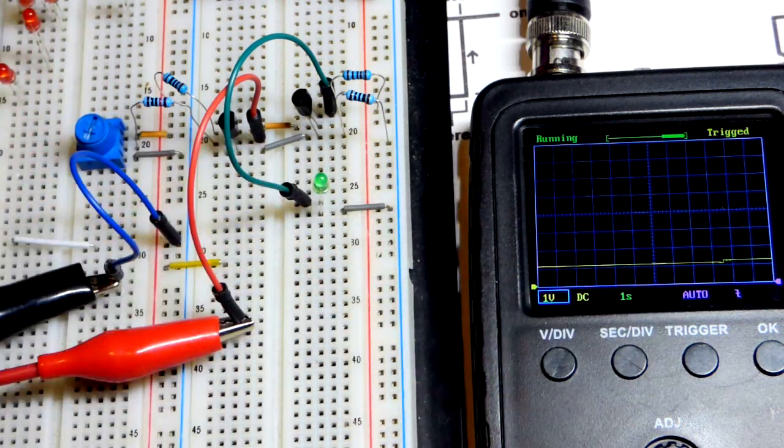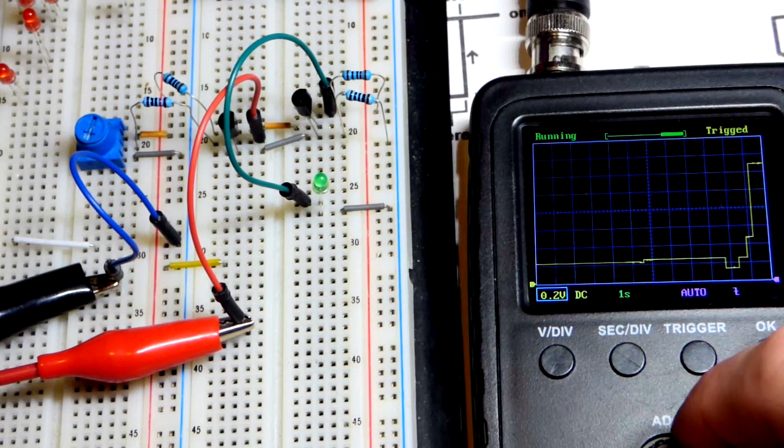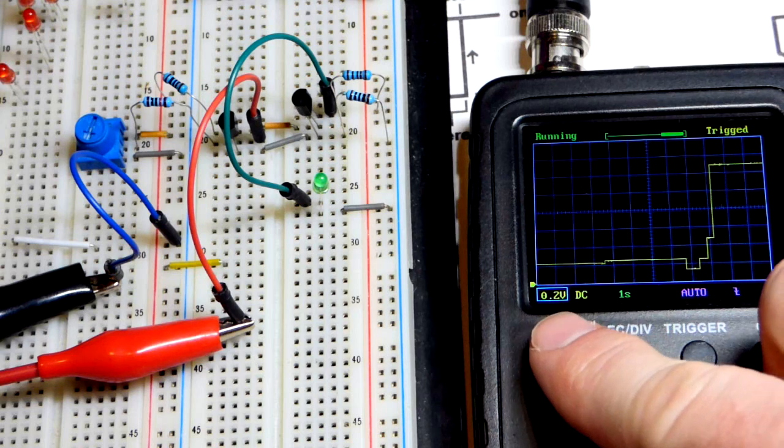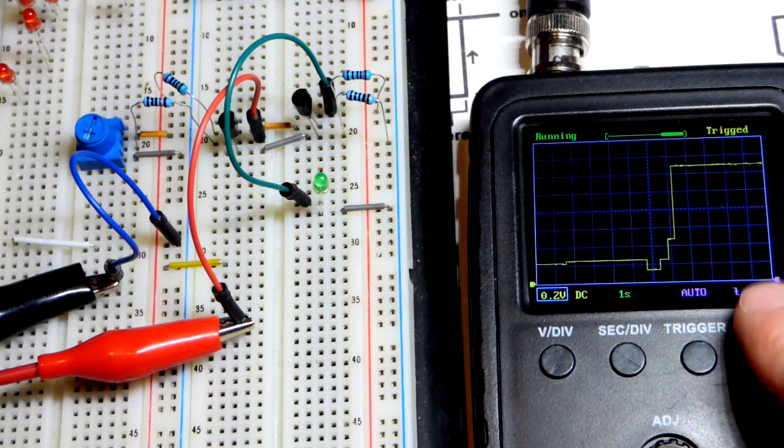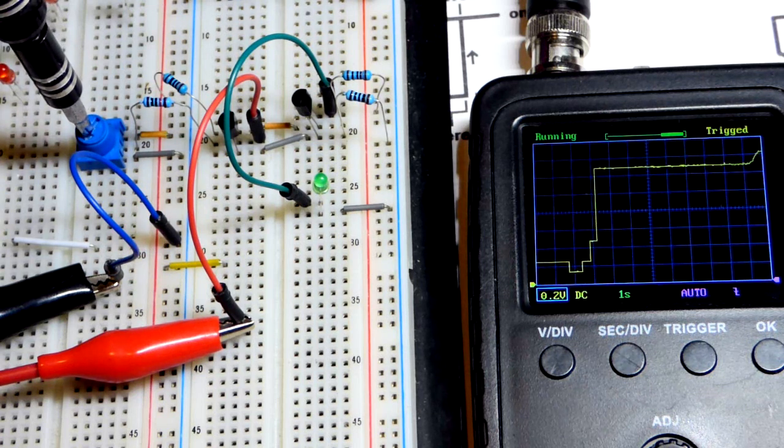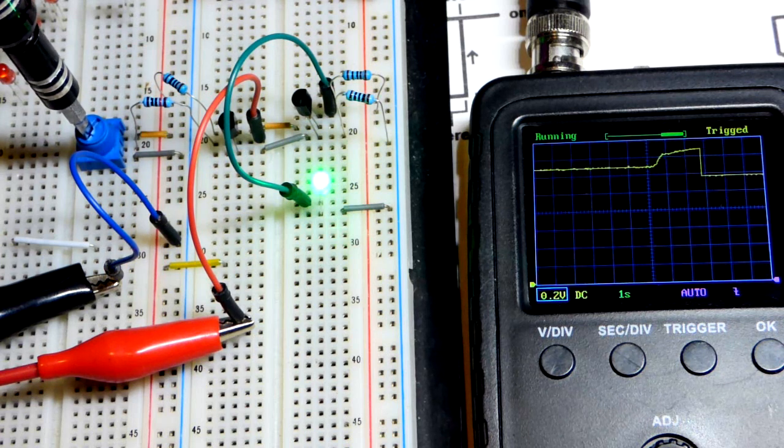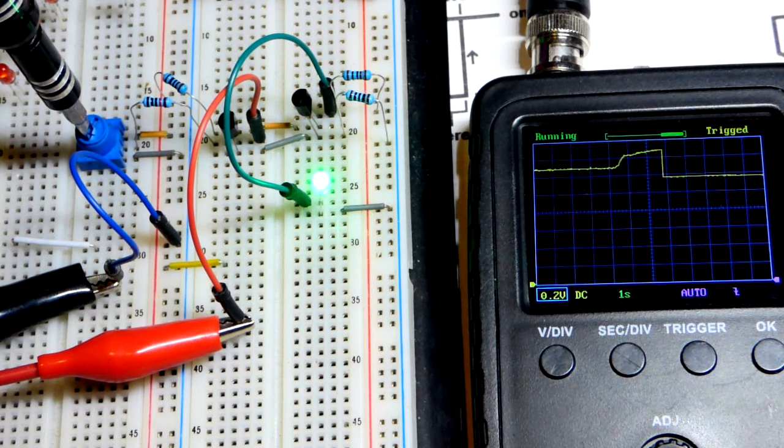We can make this so we can see it a little easier. Instead of one volt per division it's 0.2 volts per division, so it's about five times higher. I will turn this up a little bit and you can see thanks to feedback it influenced the input signal.